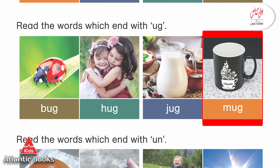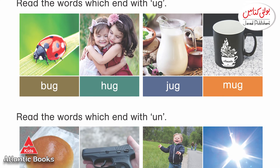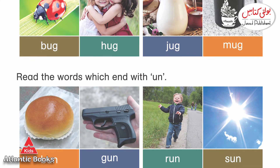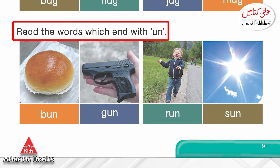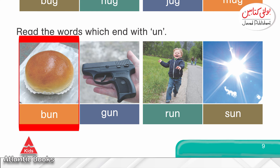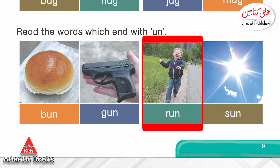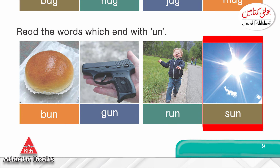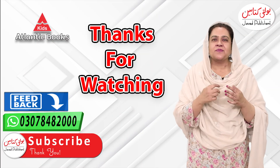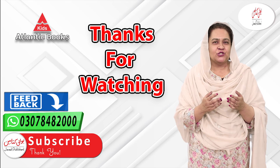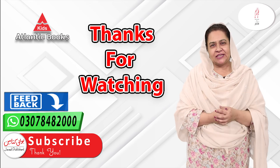The last combination of page 9 is U and N, making the sound 'un'. The words are: gun, run, sun. Thank you for watching — keep your books with you!